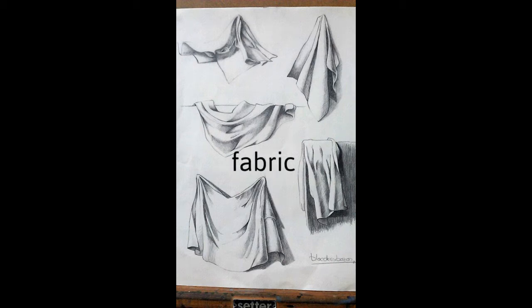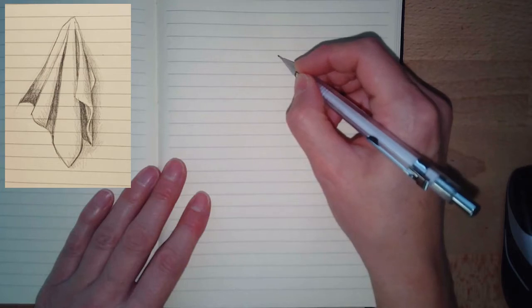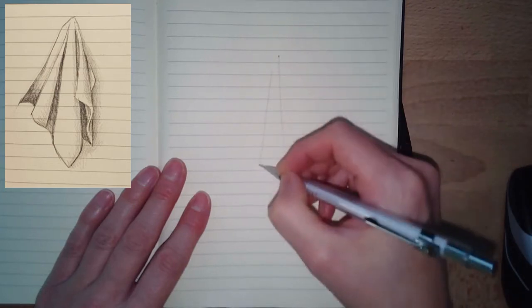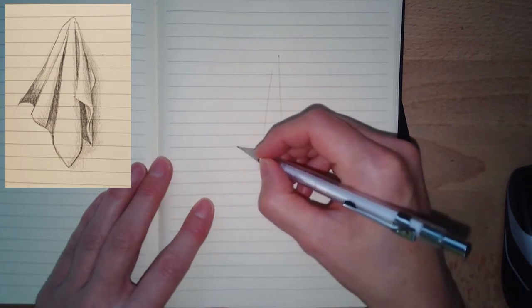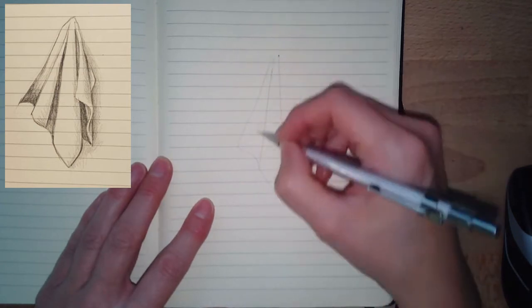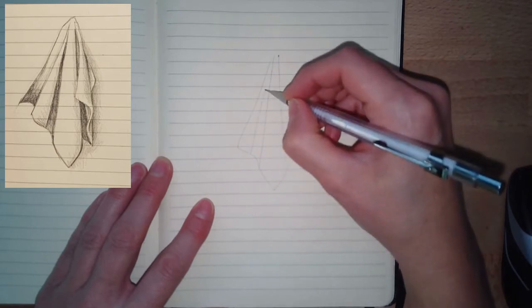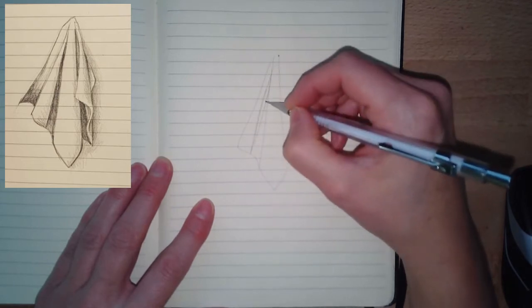Okay, so I'm going to draw the top right fabric. What you want to start with is just that center big piece of fabric, I guess cloth, and it's just a really elongated triangle I would say at the bottom end shape.